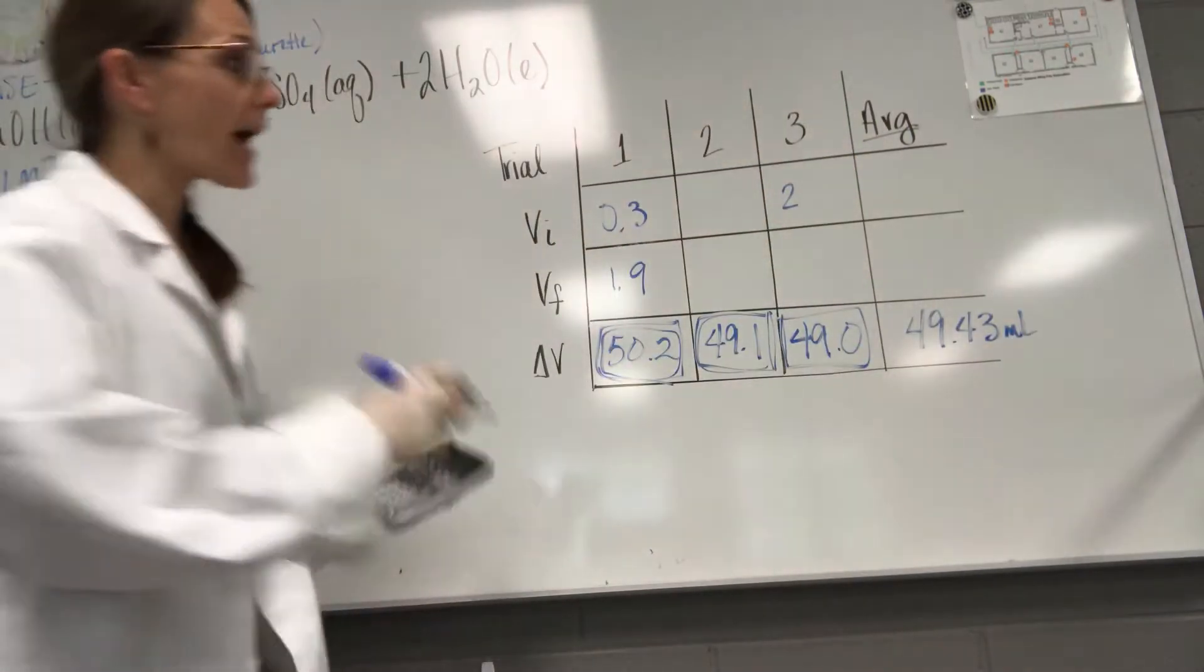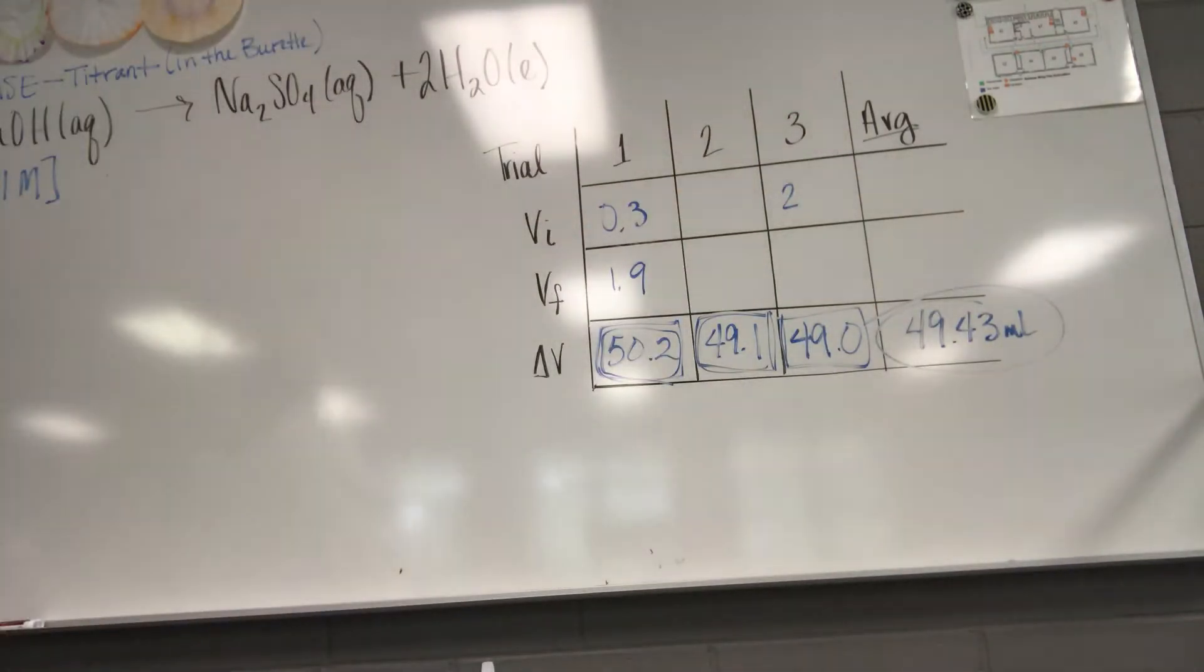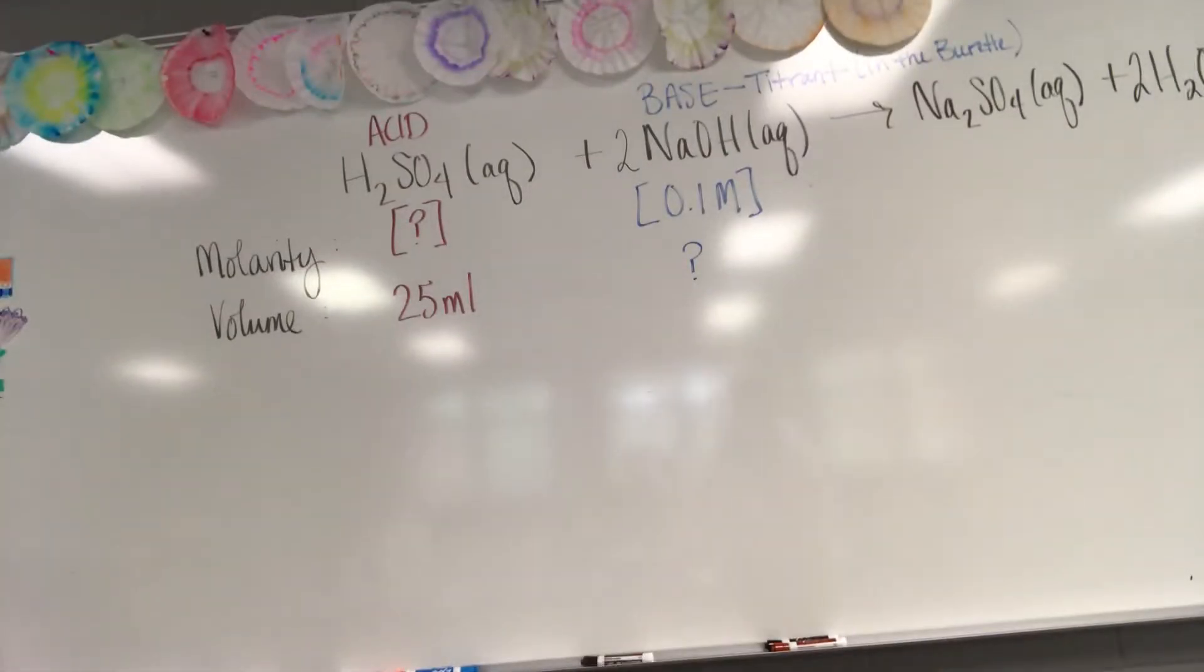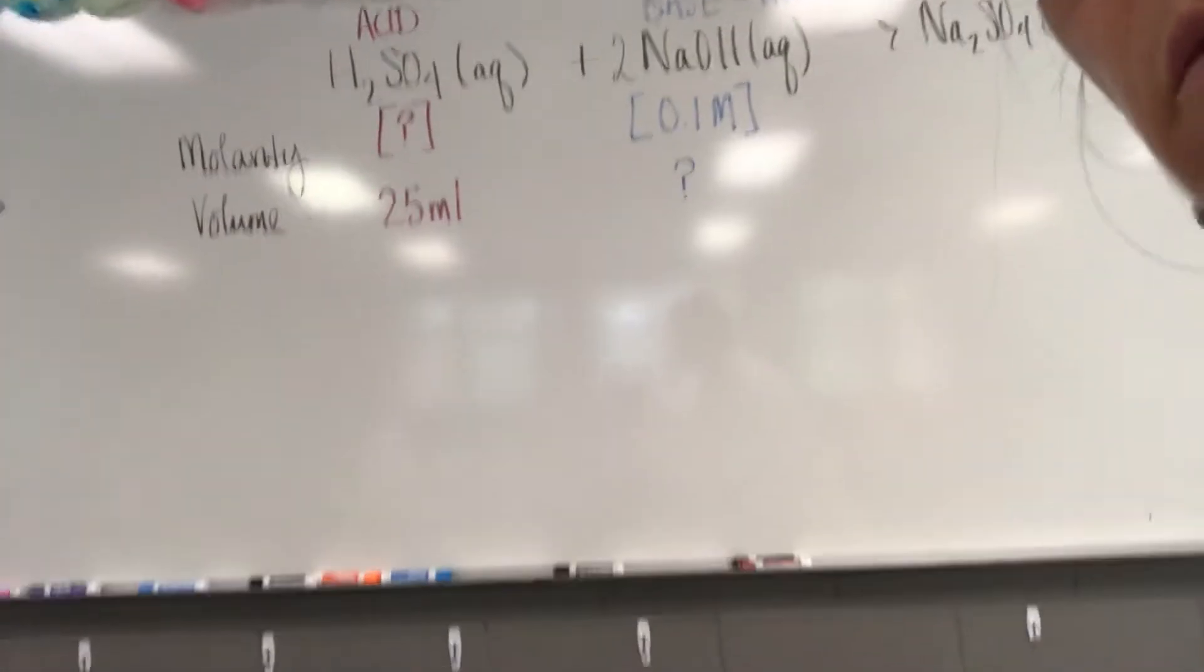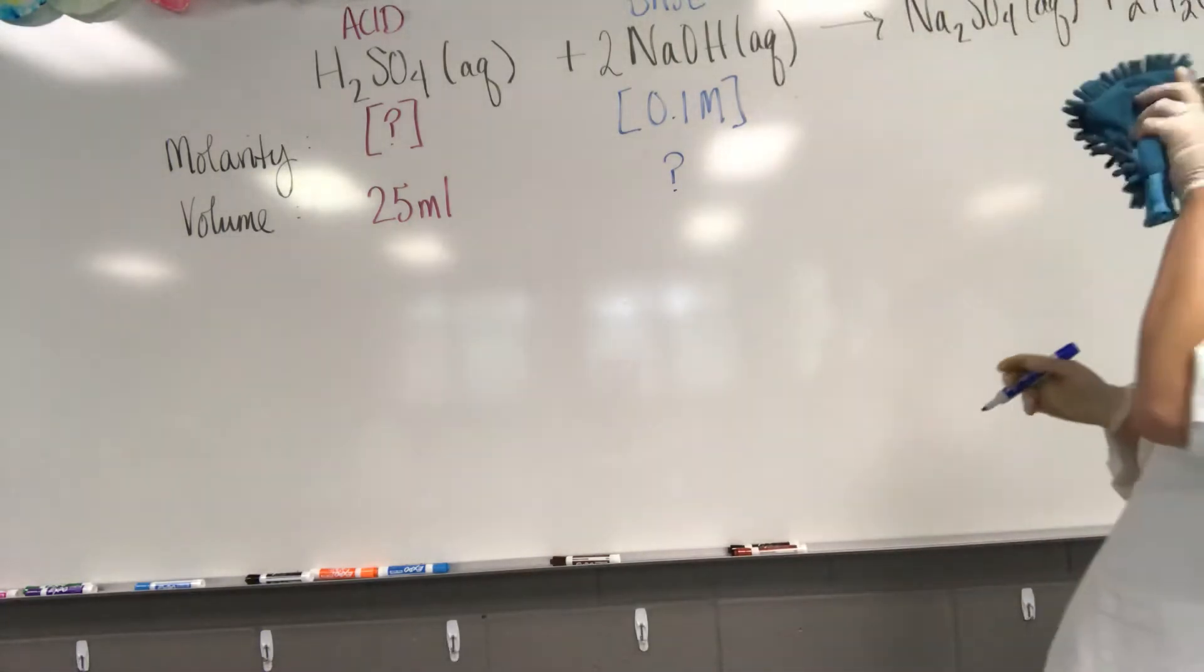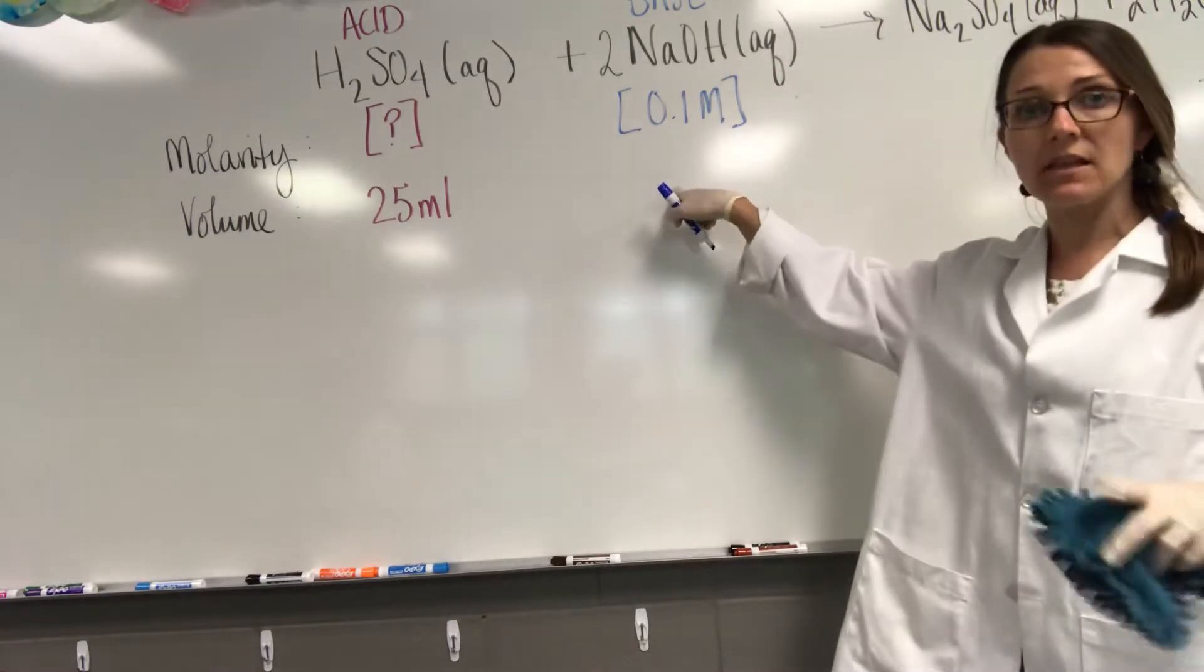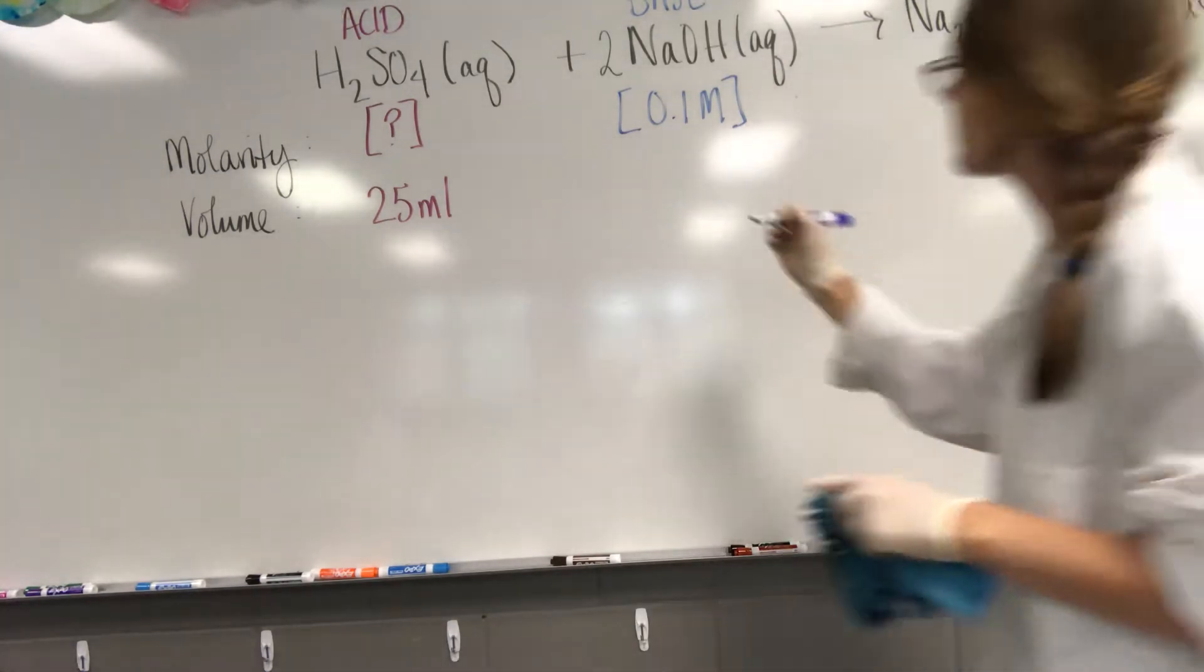Okay, so that's the average volume. I'm going to move you over before I start doing my calculation down here. So I now know the volume of base that I used to titrate, and I had 49.43 mils.